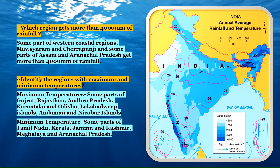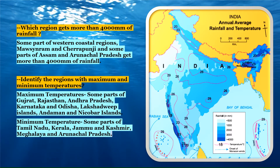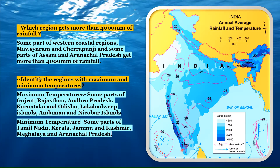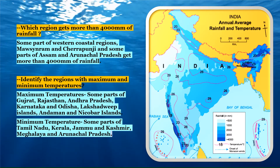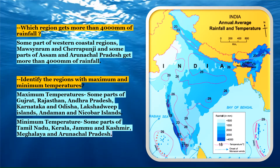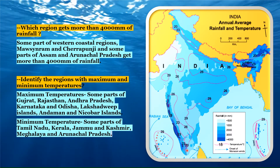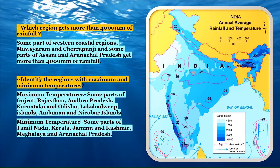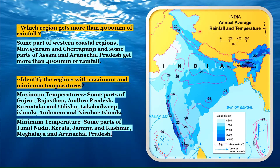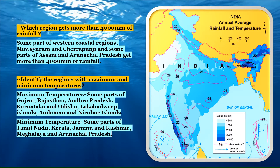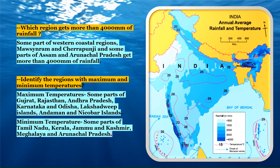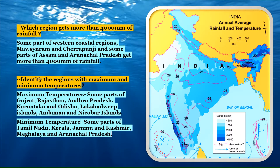For minimum temperature, the regions with minimum temperature — shown as 20 degrees — are some parts of Kerala and Tamil Nadu. Then we have Jammu and Kashmir, and then Meghalaya and Arunachal Pradesh. These are the regions with minimum temperature.